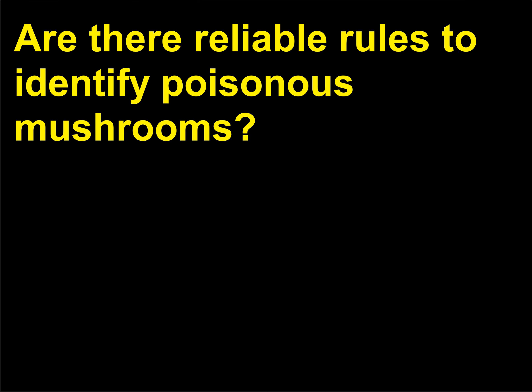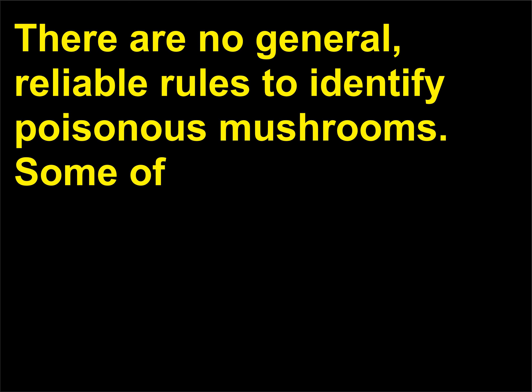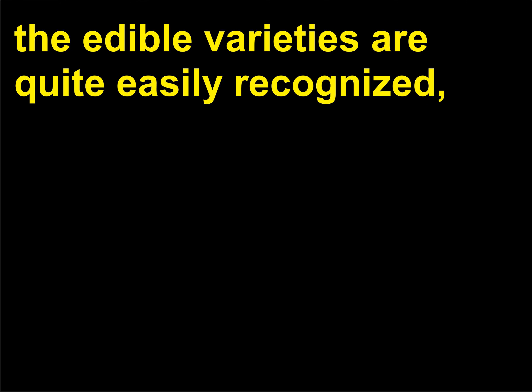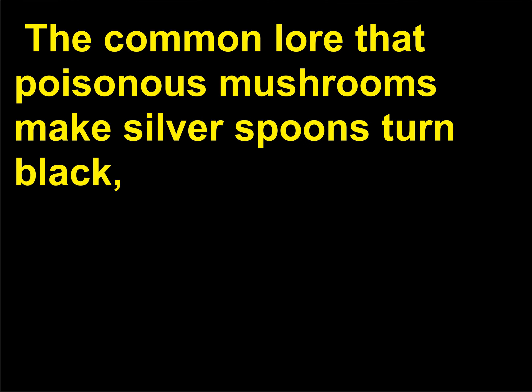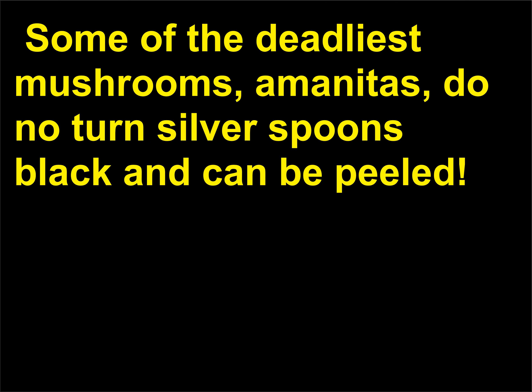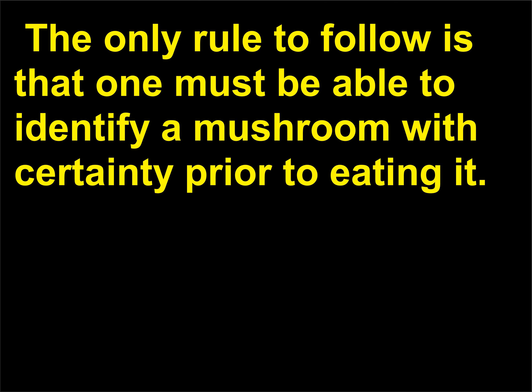Are there reliable rules to identify poisonous mushrooms? There are no general, reliable rules to identify poisonous mushrooms. Some edible varieties are quite easily recognized, but some edible varieties closely resemble poisonous mushrooms and can only be distinguished by an expert. The common lore that poisonous mushrooms make silver spoons turn black, while mushrooms that can be peeled are edible, is not true. Some of the deadliest mushrooms — amanitas — do not turn silver spoons black and can be peeled. The only rule to follow is that one must be able to identify a mushroom with certainty prior to eating it.